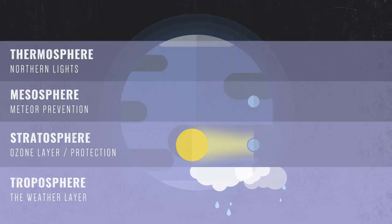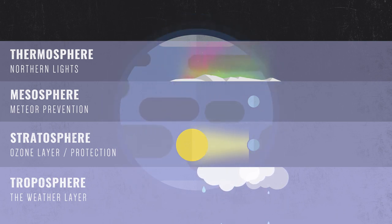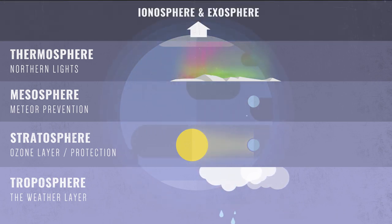The thermosphere interacts with the sun's radiation, giving us beautiful results like the northern lights. Beyond that lie the ionosphere and the exosphere.